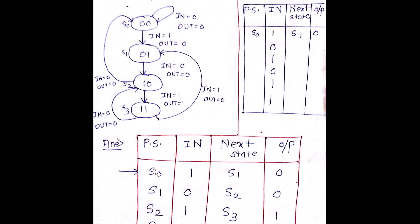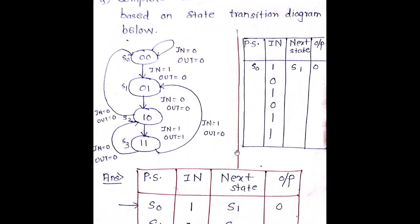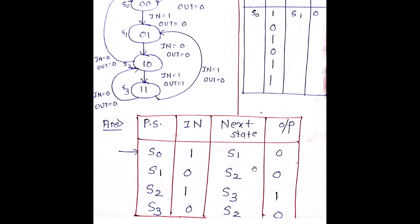When my present state is S0 and my input is 1, my next state is S1 and my output is 0. Similarly, when my present state is S1 and my input is 0, my next state is S2 and my output is 0. Now if my present state is S2 and my input value is 0, my next state is S3 and my output is 1. Similarly, if my present state is S3 and my input value is 0, it goes back to S2 and my output is 0. You just have to follow the diagram, see what is the value of input given, and determine the next state and output.